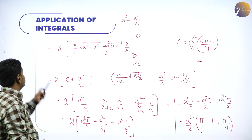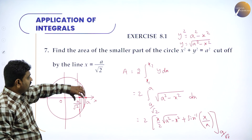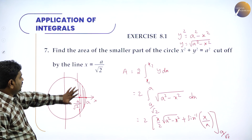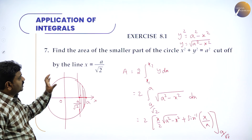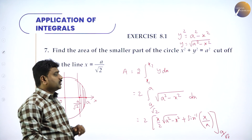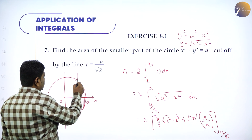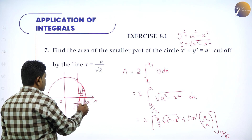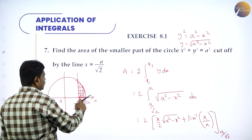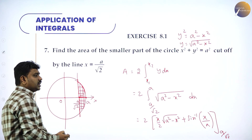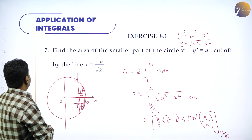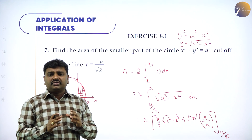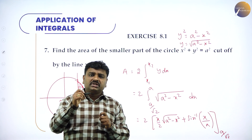All of you understood this. They want the area bounded by the smaller part of the circle and the line x = a/√2. Since they have not mentioned first quadrant specifically, we multiply by 2. First draw it geometrically, then find the exact value using integration. I hope all of you understood. I will see you in my next session. Thanks for attending.